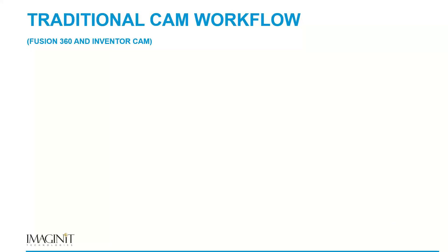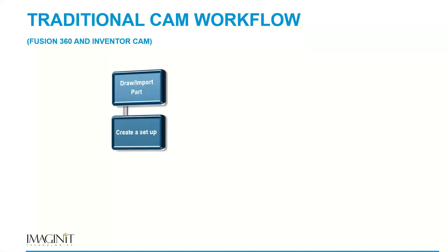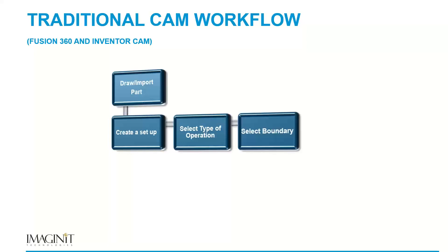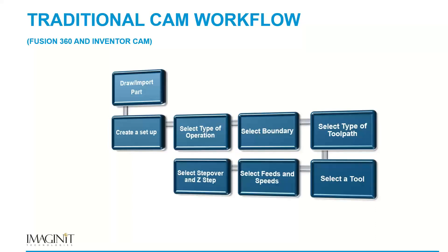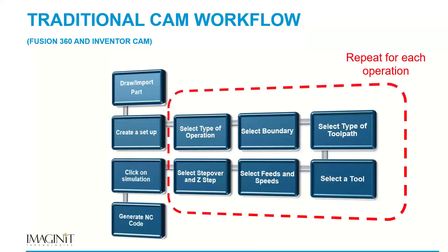Let's talk about a traditional CAM workflow — what you'd typically see in Fusion 360 or Inventor CAM. You draw and import your part, create your setup by defining stock boundary and coordinate system, then choose what type of operation you want — facing, roughing, finishing, drilling. You then select the boundary, toolpath type, tool, feeds and speeds, and step over and step down. Once you've made all those selections, you simulate, generate your code, and you're done. The problem is you have to repeat that for every single operation.